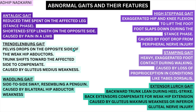Starting with an overview, we will be talking about antalgic gait which is a painful gait; Trendelenburg gait which is caused due to hip abductor weakness; waddling gait which can also be caused due to hip abductor weakness; high steppage gait which can happen in cases where there is a foot drop; stamping gait which is usually caused due to loss of proprioception; and extensor lurch gait where your glutes are not doing their job.